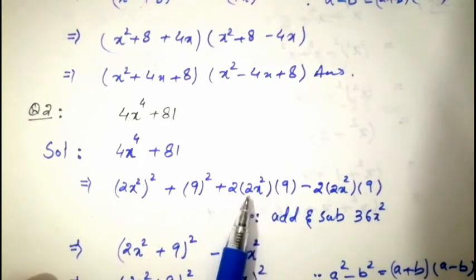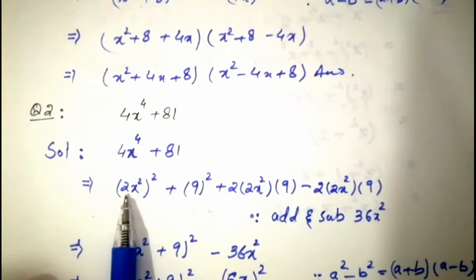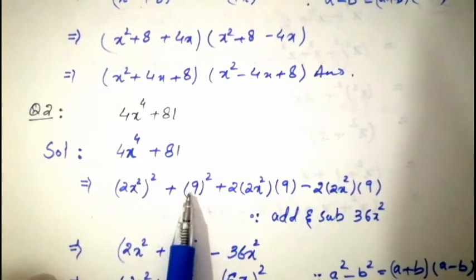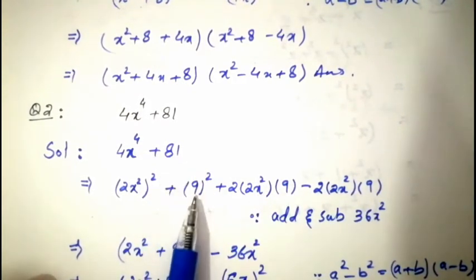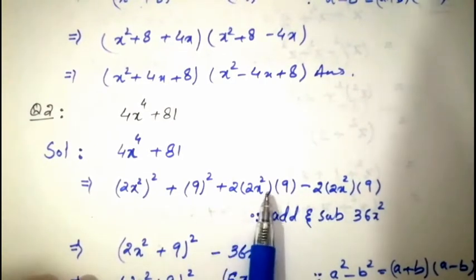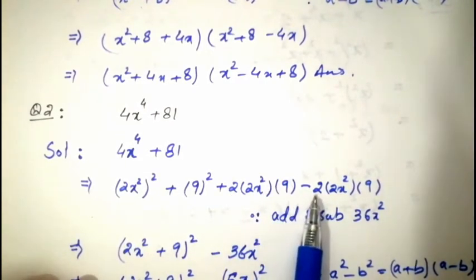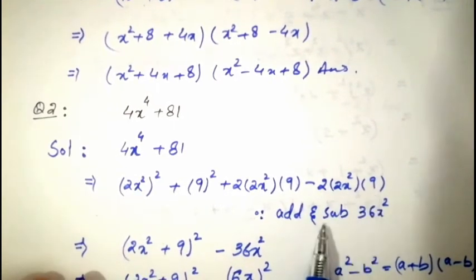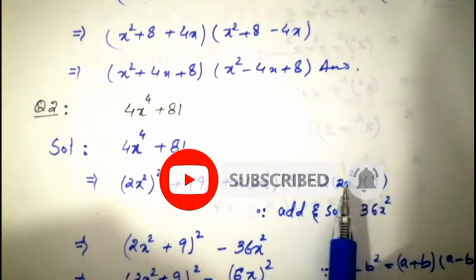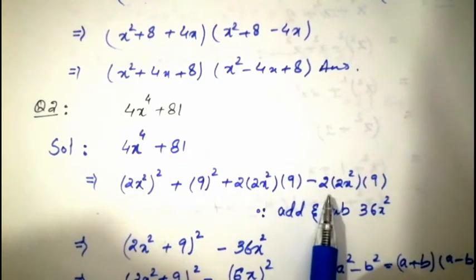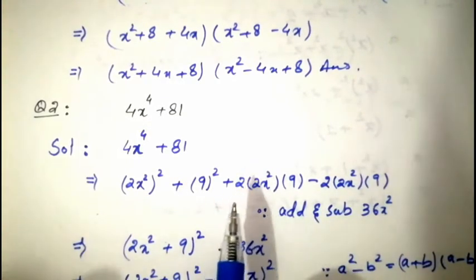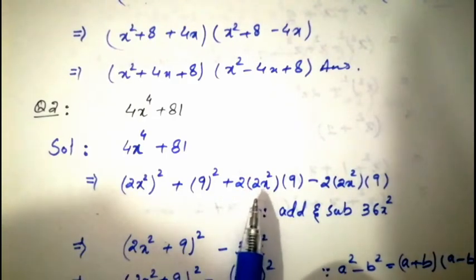Now we need 2ab. Here a = 2x² and b = 9. So 2ab = 2·2x²·9 = 36x². We add 36x² and also subtract 36x² for completing the square. So: (2x²)² + 36x² + 9² − 36x².